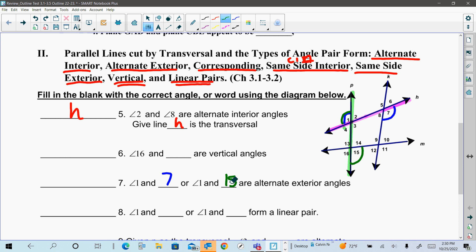So you are going to have to be able to read lines intersecting, and then which angles would make the special types of pairs.